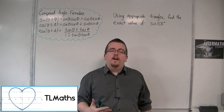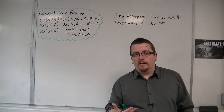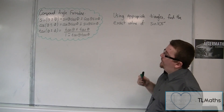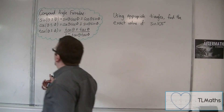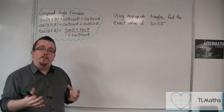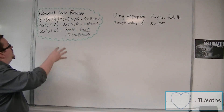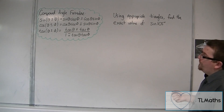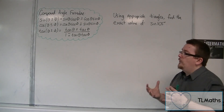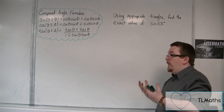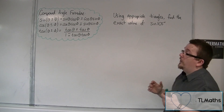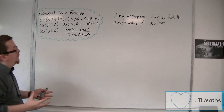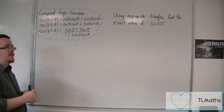On page 3 of the formula booklet, you'll find the compound angle formulas. And these are what I'm talking about. Now they look, at first glance, absolutely horrible. In one of the earlier videos, I introduced you to the one with tan, so we looked at an example using that. But these are very, very useful. And from them, we can find exact values of sine of 105 degrees, for example. And we can also build the double angle formulas, which we'll do in a couple of videos' time.